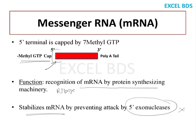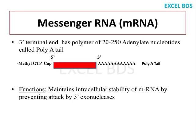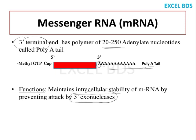In addition to capping, at the 3' terminal there is addition of 20 to 250 adenylate residues — many adenine groups are added as a tail, called poly-A tailing. The function of this poly-A tail is to maintain the intracellular stability of the mRNA by preventing attack by the 3' exonuclease enzyme, which would otherwise start digesting the mRNA from the 3' end.